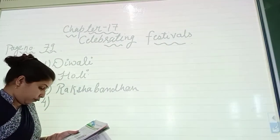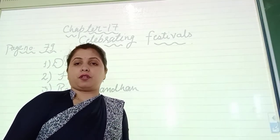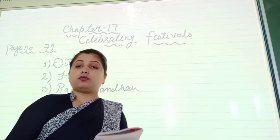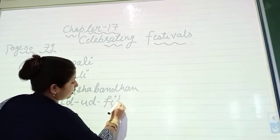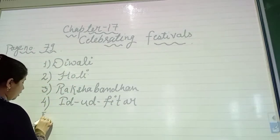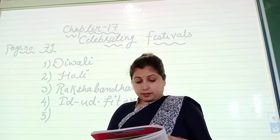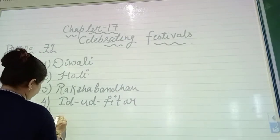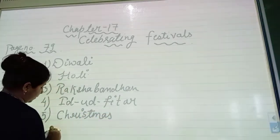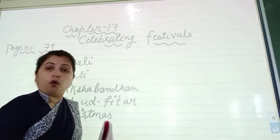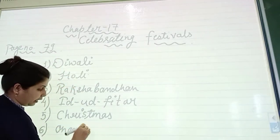The fourth one shows a boy hugging another boy and in this festival we go to the mosque and worship — this festival is Eid ul-Fitr. The fifth one shows a Christmas tree and children dancing — this festival is Christmas, C-H-R-I-S-T-M-A-S. The sixth one is Onam, O-N-A-M — both types of trees will be here.